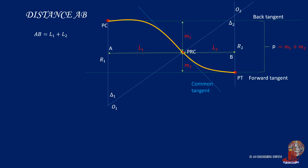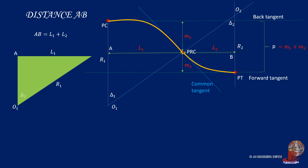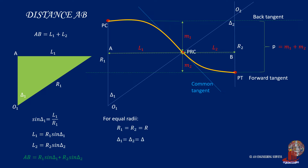The distance between PC and PT can be derived by projecting the distances from PC to PRC and from PT to PRC, so AB equals L1 plus L2. Extracting the triangle formed by the curve and using sine of delta 1, where sine(delta 1) equals L1 over R1, L1 is computed as R1 times sine(delta 1). L2 is computed similarly. So AB is R1 times sine(delta 1) plus R2 times sine(delta 2). For equal radii with parallel tangents, R1 equals R2 equals R, and delta 1 equals delta 2 equals delta, simplifying AB to 2R times sine(delta).